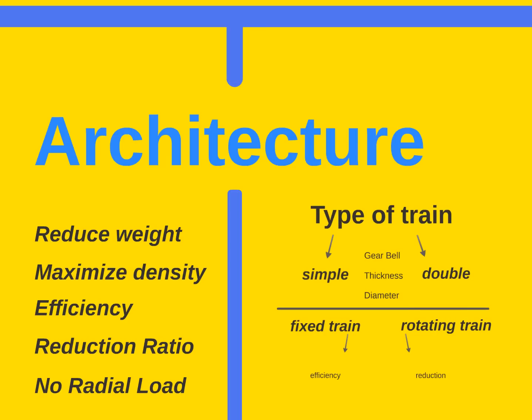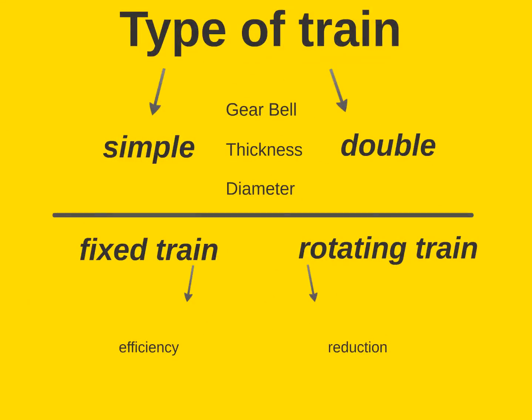We don't want to increase the complexity of the rotor dynamics of the shaft. To get those targets, first I will have to choose the type of the train. It can be simple or double. The main difference would be the use of a gear valve, the thickness, and the diameter of the gearbox. Then, to choose the moving part of the train. Will it be a planetary fixed train or a planetary rotating train? This decision will impact the efficiency and the reduction ratio. Fixed train is better for efficiency. Rotating train is better for reduction ratio.